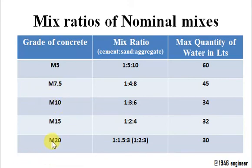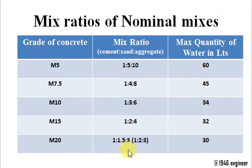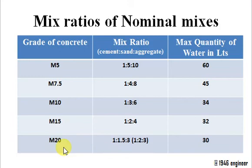Similarly, for M20 grade of concrete, we need one unit of cement, 1.5 or two units of sand, and three units of aggregate, along with 30 liters of water. This will produce a cube with a characteristic strength of 20 Newton per mm².